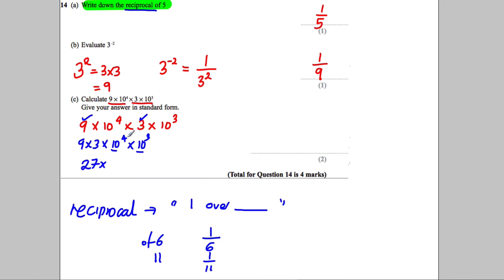The base numbers are the same, so we can add the powers when multiplying. So that's 10 to the power of 7. Now you're asked to give your answer in standard form. Standard form has to have the first number between 1 and 10.